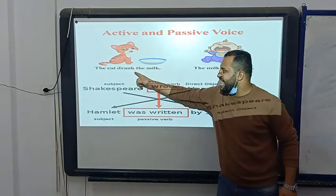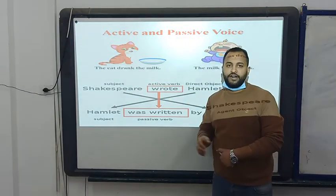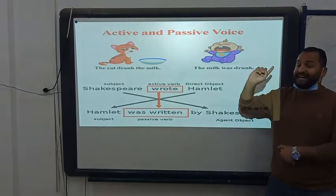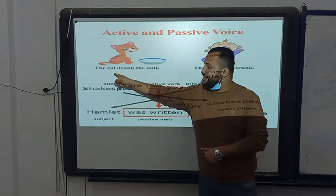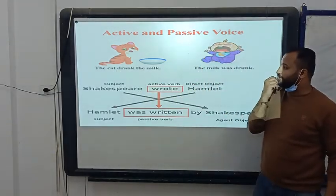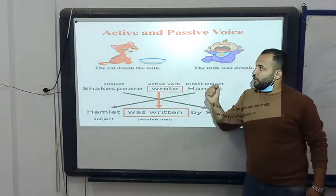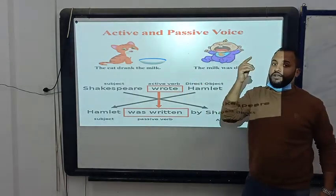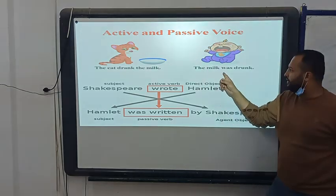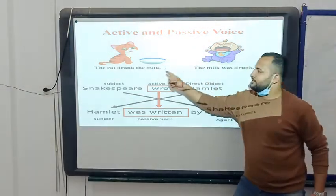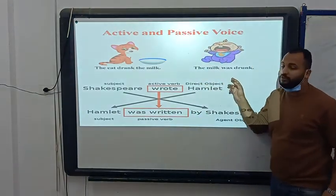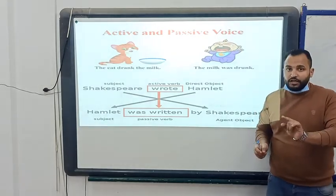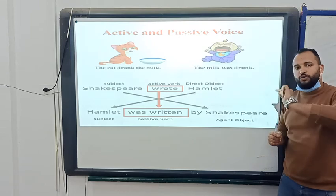Look at this: The cat drank the milk. The cat is the subject, drank is the verb in the past, the milk is the object — it's called active because the subject is first. I want to make it passive. I start with the object. The verb is in the past, so I use was or were instead of is/are. So I say: the milk was drunk. Drank, drunk. The passive in the past is like the present, but we use was/were and then past participle.